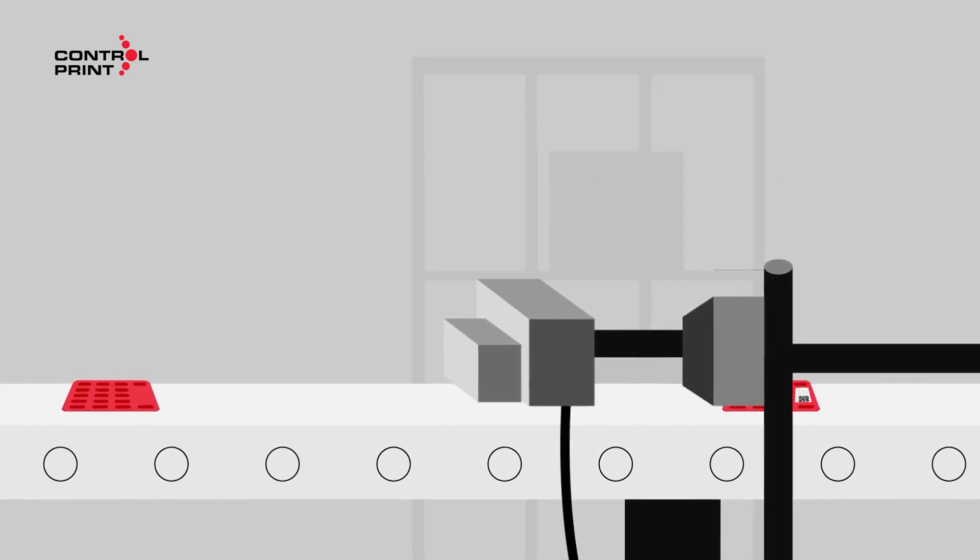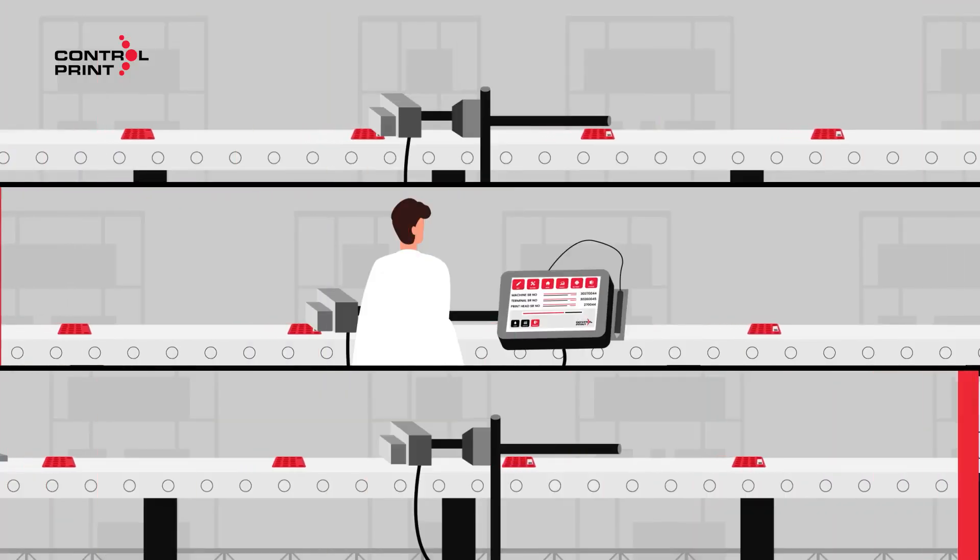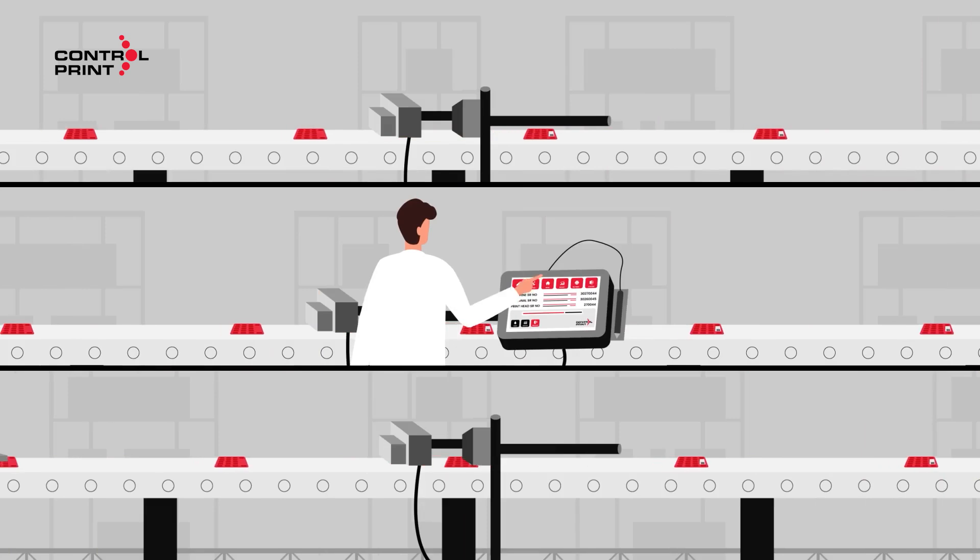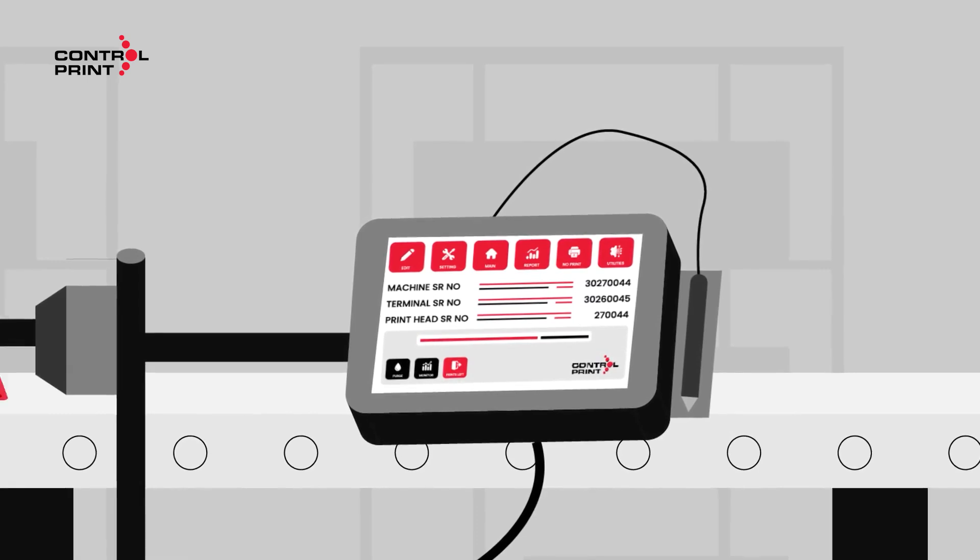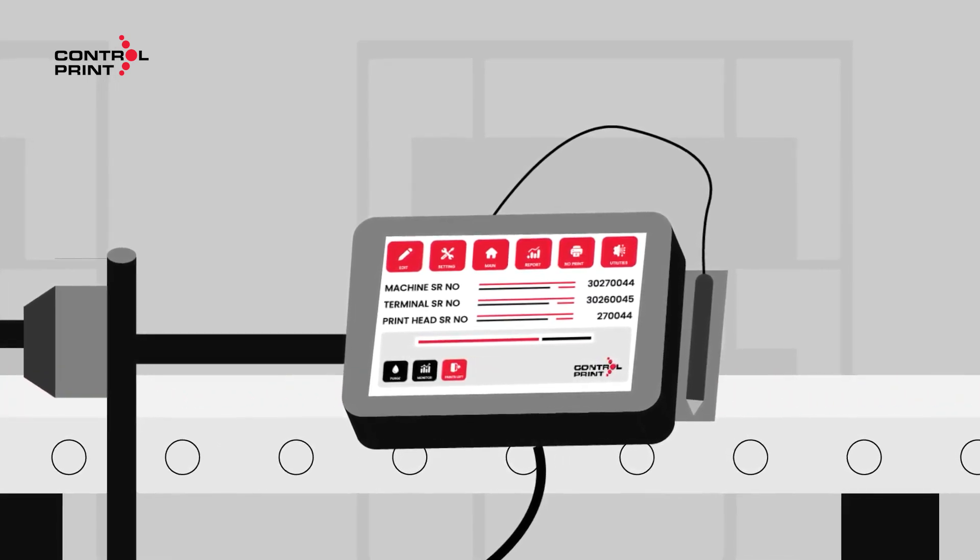With ControlPrint's print-center software, operators can manage multiple production lines seamlessly from a single window, editing and saving messages across multiple printheads, all from one screen.